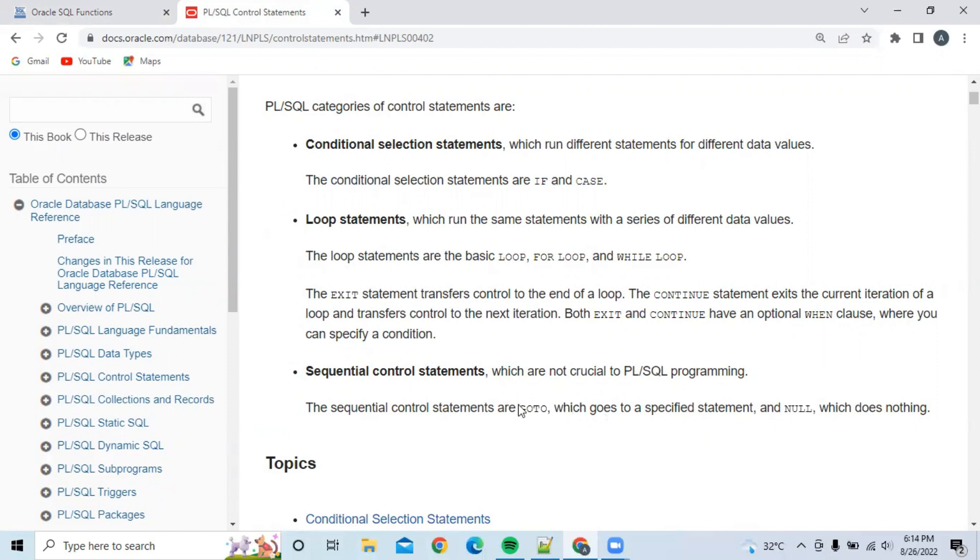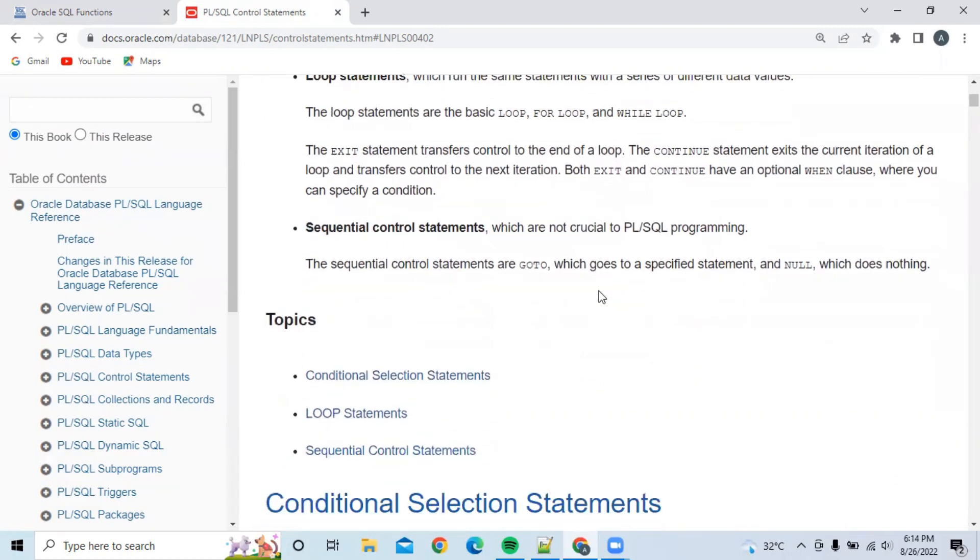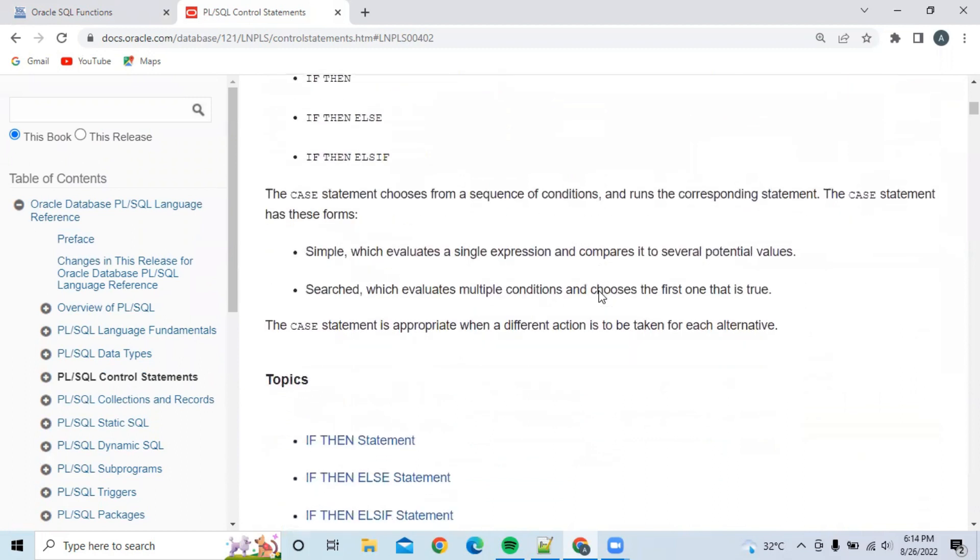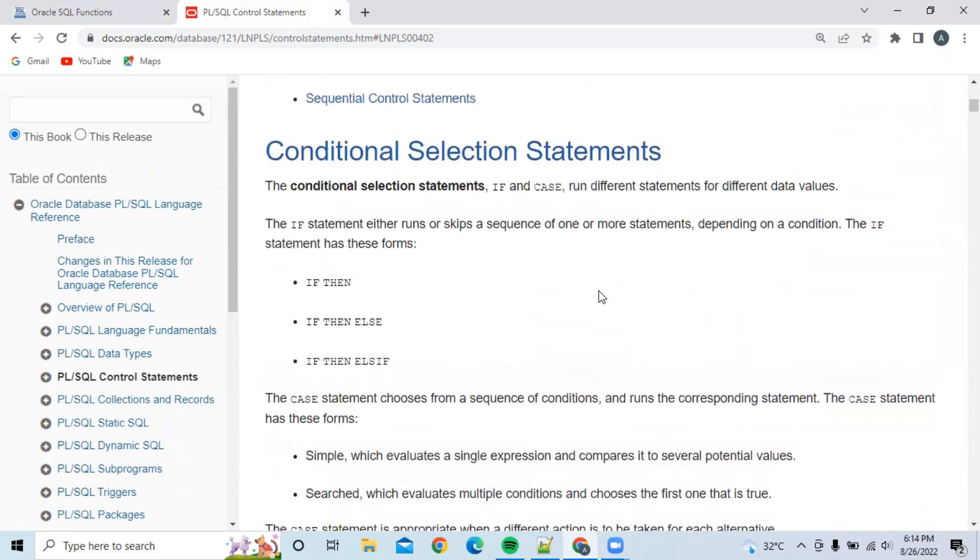In the last exam, they asked which of the following is a sequential control statement and gave options like loop, for loop, goto, and if. You have to select goto. If you scroll down, they have explained each of these topics in detail. You have to study this. I will give the link of these topics in the description so you can go and study.